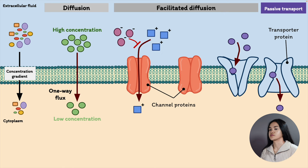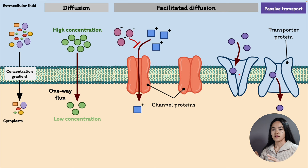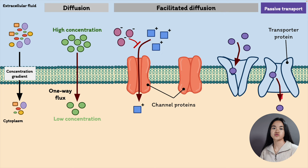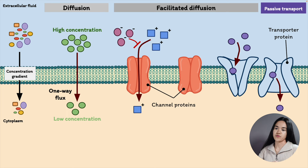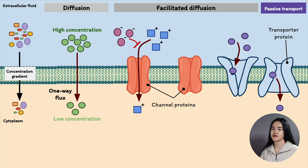The membrane transport proteins are specific for particular substances, and when the concentration of the solute increases, the transport proteins can become fully occupied. There are two main types of membrane proteins in facilitated diffusion: channel proteins and carrier proteins. Channel proteins are specific for a substance and don't need to bind to the molecules being transported, whereas carrier proteins bind the molecules being transported, causing a conformational change — it's these shape changes that allow specific substances to be transported across the membrane. After crossing the bilayer, the protein is restored to its original shape. A great example is the glucose transporters that transport glucose across plasma membranes.